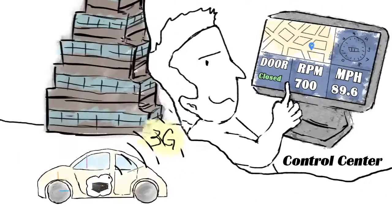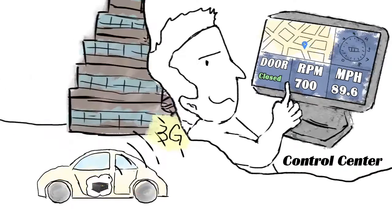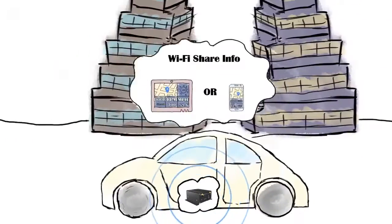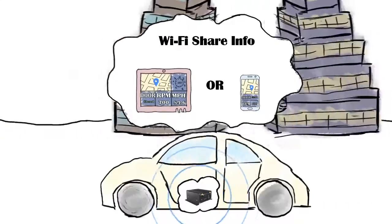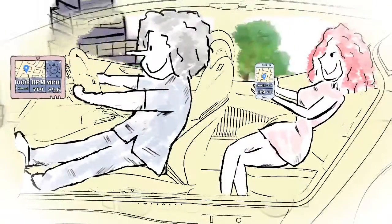If an accident or quarrel happens inside the car, the control center can monitor the situation by microphone reception.